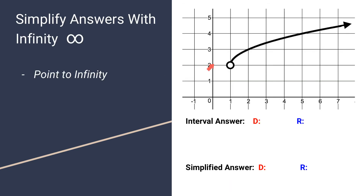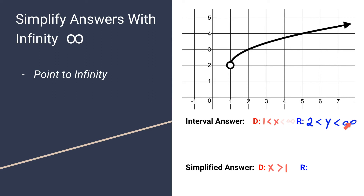This example is a side note to point out that when you have a domain with a starting point going off to an arrow toward infinity, you write the domain as 1 is less than x, which is less than infinity. Then you can erase the infinity part and just leave x is greater than 1 as your answer. For the range, the graph starts at 2 and goes up with an arrow, so we say the range goes from 2 up to positive infinity. Removing the infinity symbol, you're left with y is greater than 2 — the more preferred way to write this on a standardized test.